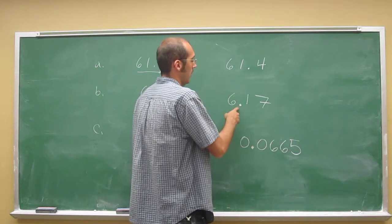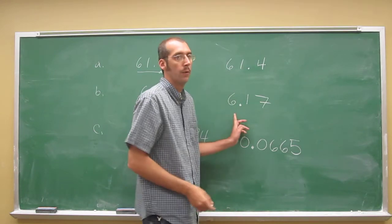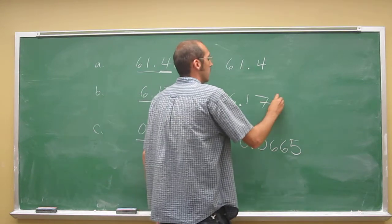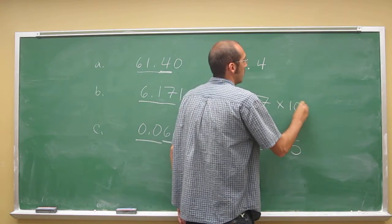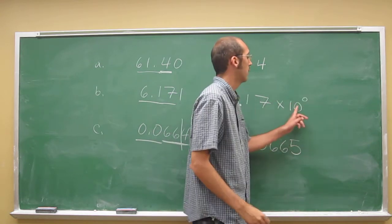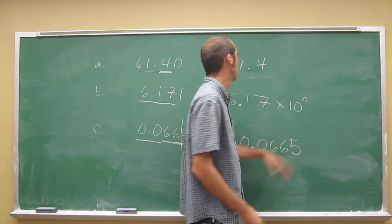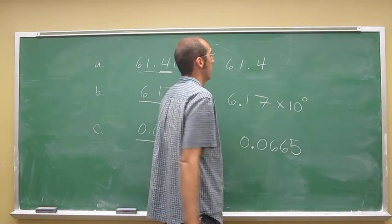So this one's in the right place. If we wanted to put it in scientific notation, we would just do times 10 to the 0, because 10 to the 0, that's actually 1, because we're not trying to change this number at all.